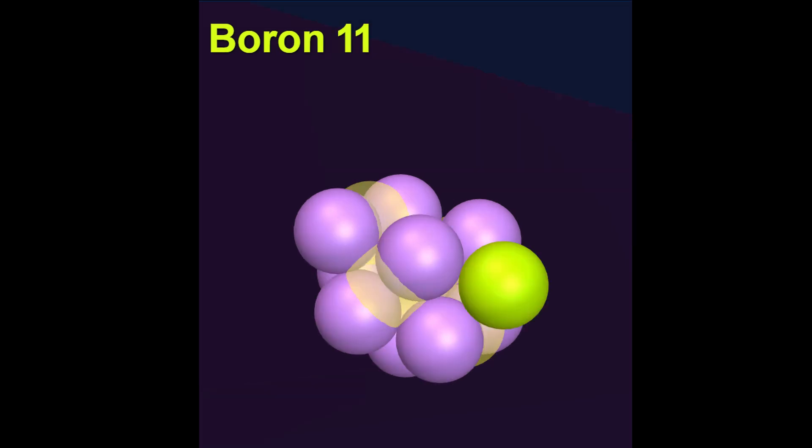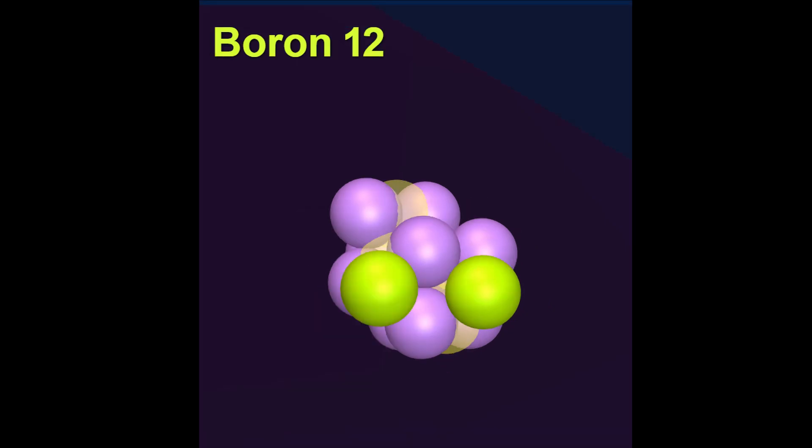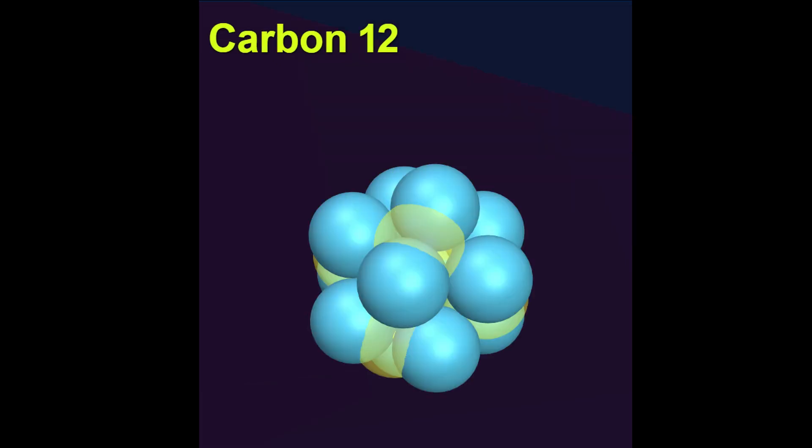Moving along we see that adding to boron 10 we arrive at boron 11, a stable configuration that is also more abundant than boron 10. Continuing this we arrive at boron 12 which decays to carbon 12 again like we discussed with lithium 9.